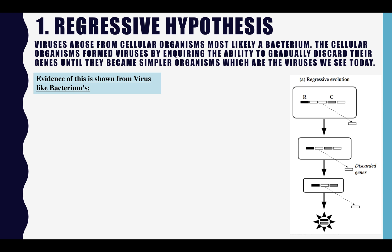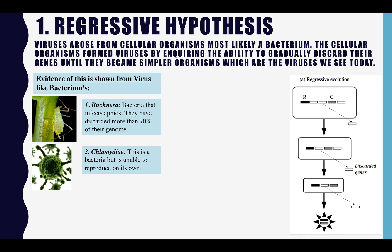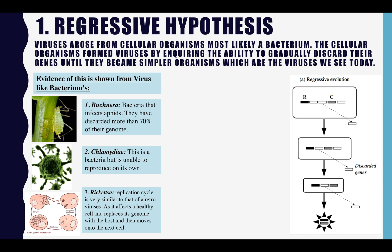The first example is a bacterium known as Brontia that infects aphids, which has the ability to discard 70% of its genome. Secondly, Chlamydia is a bacterium that is unable to reproduce on its own and must have a host cell, which is very similar to that of a virus. And thirdly, Rickettsia, whose replication cycle is very similar to that of a retrovirus, as it infects a healthy cell and replaces its genome with the host's, and then is able to move on to the next cell and infect there.